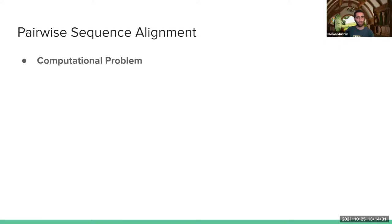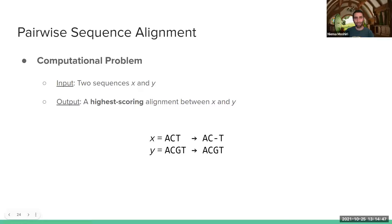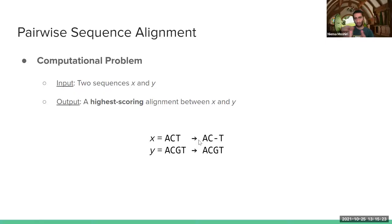This motivates the first problem: pairwise sequence alignment. The input is two sequences X and Y assumed to come from some common ancestor. The output is a highest-scoring alignment between X and Y. I insert gap characters — dashes — anywhere in either sequence such that the overall alignment score is maximized. For example, I could put a gap before the C, before the A, or after the T. I want to find the optimal placement of gap characters to maximize the score.